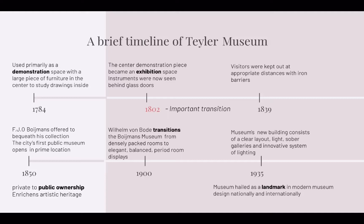In 1784, the museum was used primarily as a demonstration space with large pieces of furniture in the center, where people could study drawings inside. About 20 years later, this space transitioned into an exhibition space, with instruments now visible behind glass doors. This is a very important year of transition because the space changes from a demonstration space to an exhibition space.